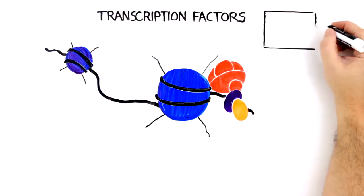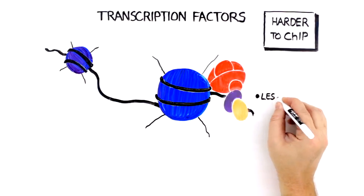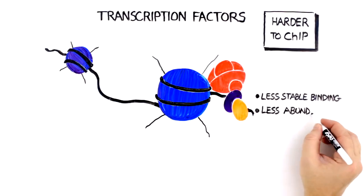Transcription factors are more difficult because they bind less stably to DNA, are less abundant, and show more sensitivity to harsh fragmentation methods.